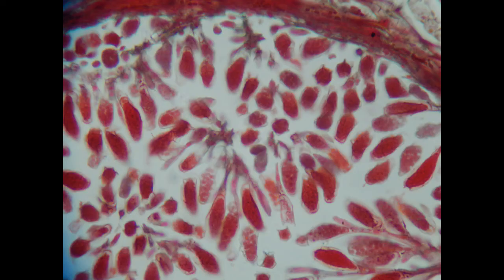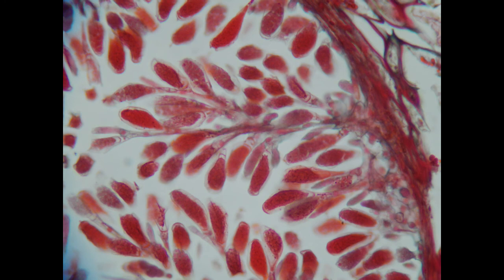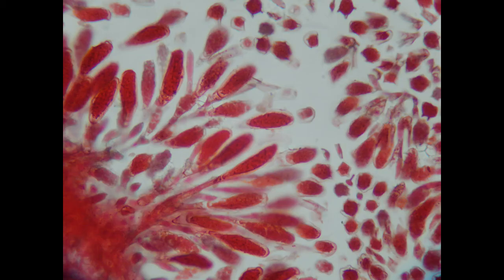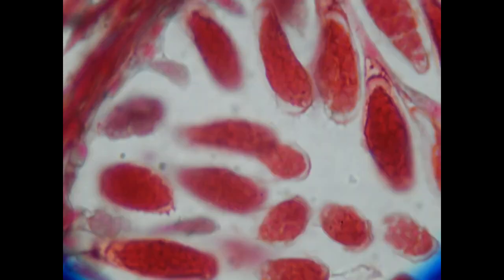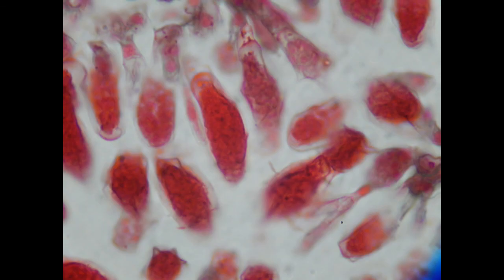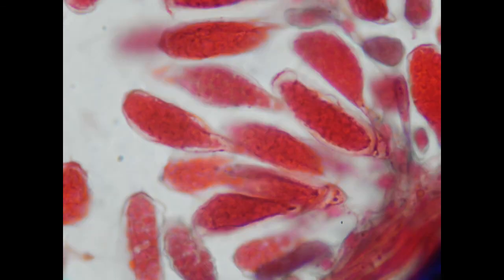Other brown algae have more complex life cycles and can even have a haploid stage which is multicellular in addition to the diploid stage. So protists in general, and brown algae particularly, can be quite complex.